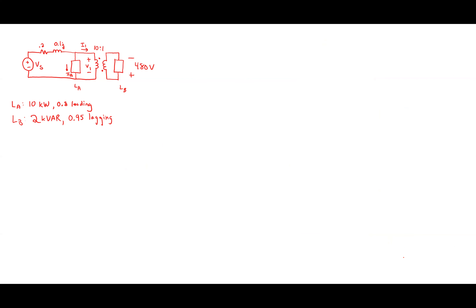Now for Load A: I'm told 10 kilowatts and 0.8 power factor leading. Since it's leading, it's a capacitive load — fourth quadrant. I've been told P: P_A equals 10,000 watts. The angle phi_ZA — how do I find it? It's negative inverse cosine of 0.8, because it's leading.